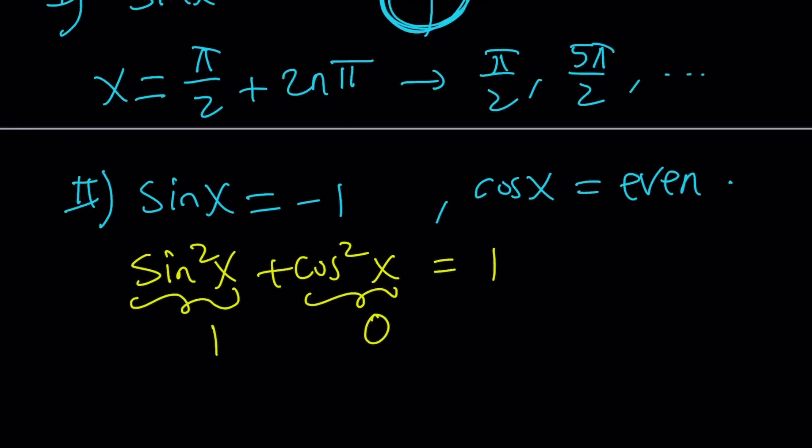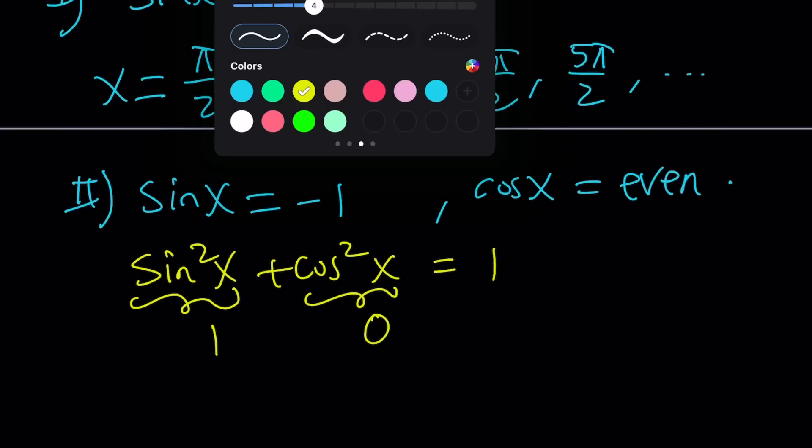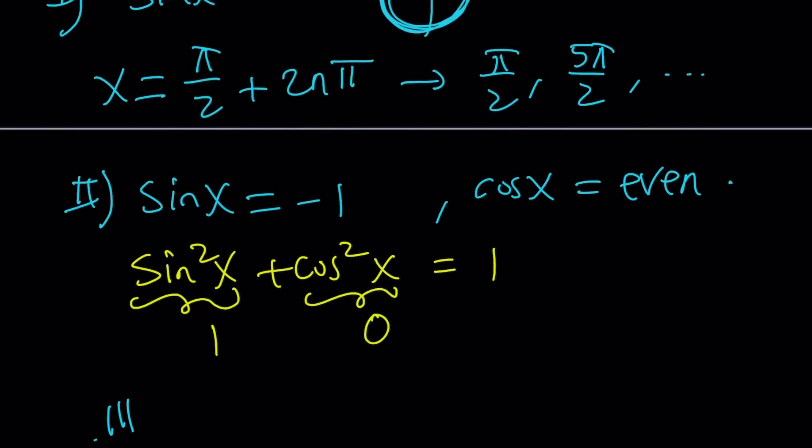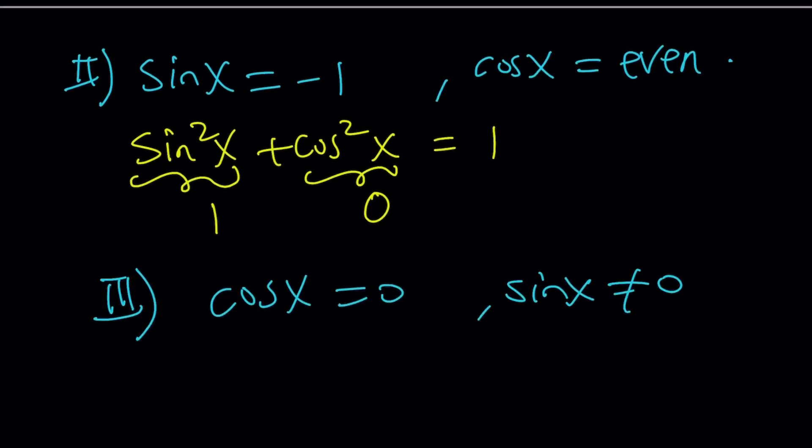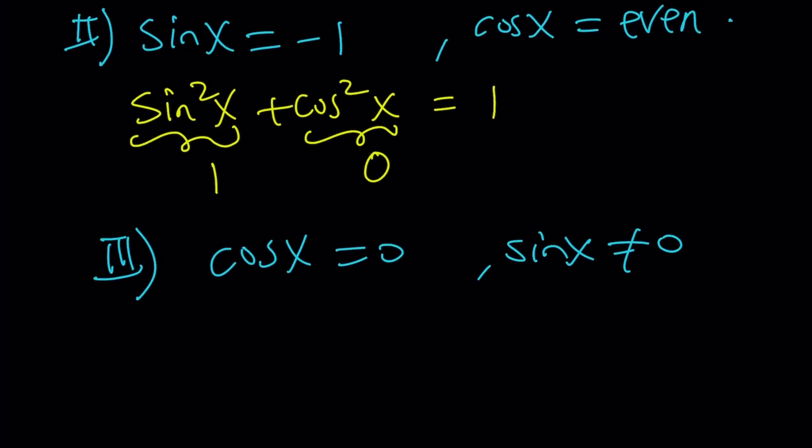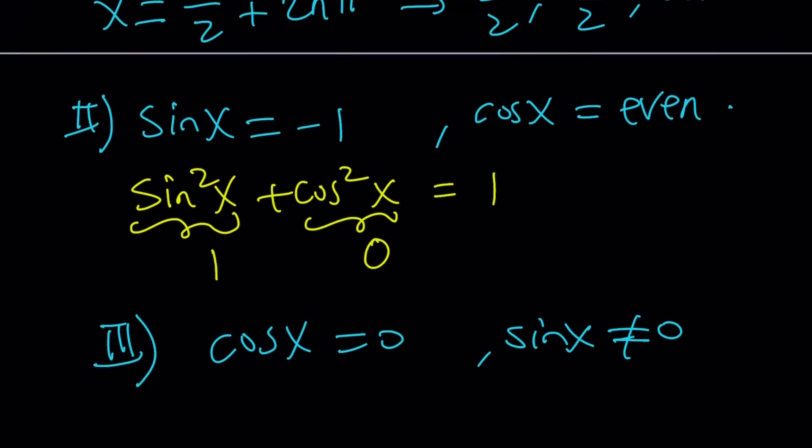So, it works, right? But guess what? That's the third case as well. They kind of coincide, because if you look at the third case, we said, we want cosine x to be 0, and we don't want sine x to be 0. But guess what? They cannot be 0 at the same time. It's impossible, right? Not even in the complex world? I don't think so.